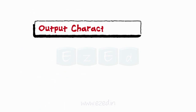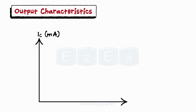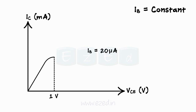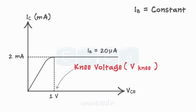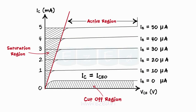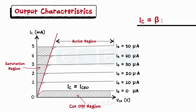Now let's move on to output characteristics — a curve between output current IC and output voltage VCE, keeping base current IB constant. IC varies linearly with VCE for VCE between 0 and 1 volt. After this, IC almost remains constant and becomes independent of VCE. The value of VCE up to which current varies linearly and then becomes constant is called the knee voltage. Practically, IC almost equals beta × IB after knee voltage.